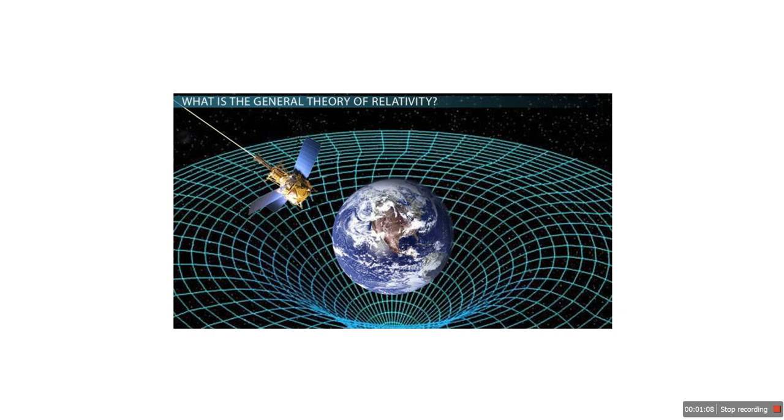A smaller ball like the earth rolls around this dent. It's not being pulled by a force. It's following the curve in the fabric. This is how gravity works according to Einstein. Massive objects like planets, stars and black holes bend the space-time around them. Smaller objects move along these curves creating the effect we call gravity.